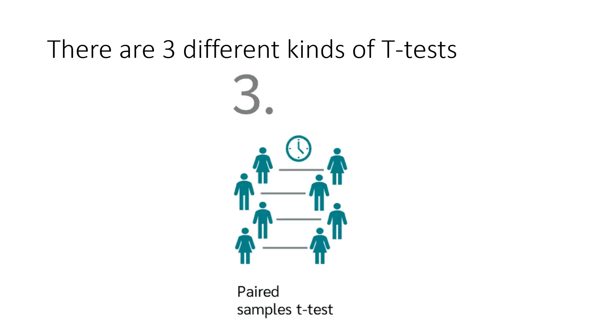Our third and final T-test is the paired sample T-test. Again, there's a little bit of a clue in the name. The paired sample T-test is used when you have one group that you want to look at before and after an intervention.